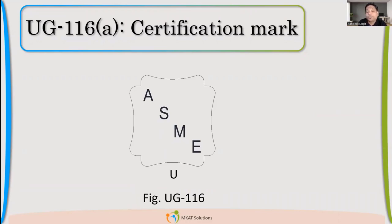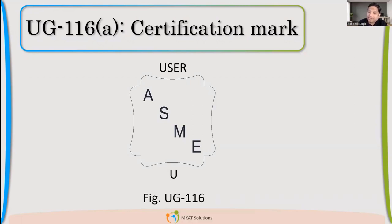The code gives an exemption in one case: the manufacturer can use his own inspector. But in that case, the stamping will not look like the standard U stamp — it will say 'User.' That word gets added. ASME allows this only when you are the end user — meaning the manufacturer himself will use the vessel. He is the end user, so only then can he manufacture under ASME, use his own inspector, and apply this mark. But 'User' must be written, and the end user has to be the same manufacturer.